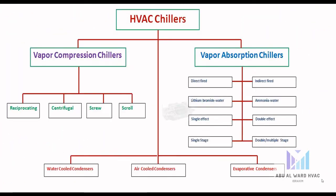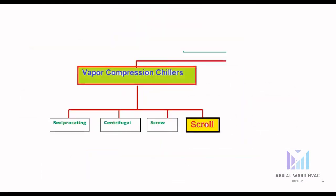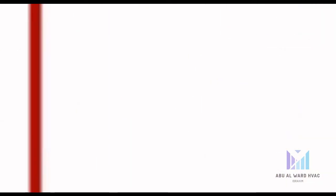Screw compressors are another type of positive displacement compression: as the screw rotors turn, the gas is compressed. They have one or more rotors to accomplish the compression. Positive displacement compressors are best suited to handle smaller volumes of refrigerant gas over high compression ratios. The HVAC industry is trending to phase out reciprocating compressors, favoring screw and scroll. Screw compressors are used in the 70 to 500 ton range and in both water-cooled and air-cooled chillers.